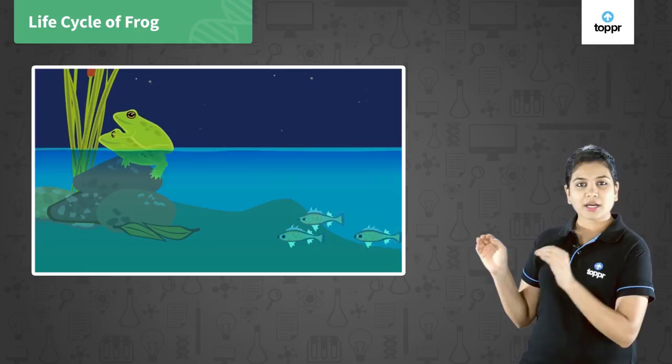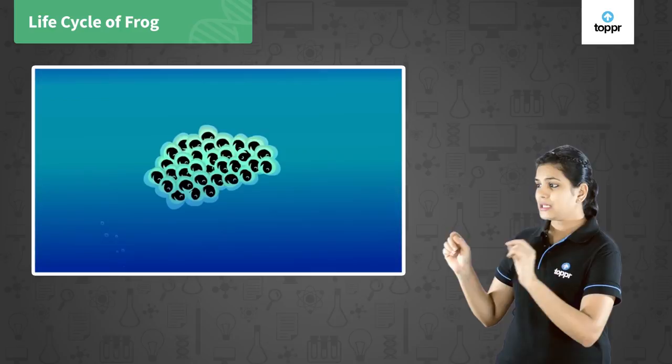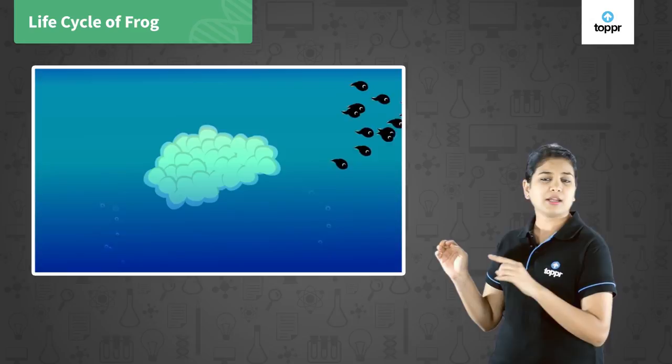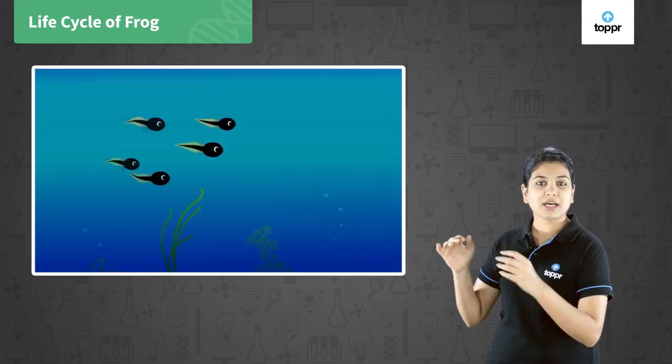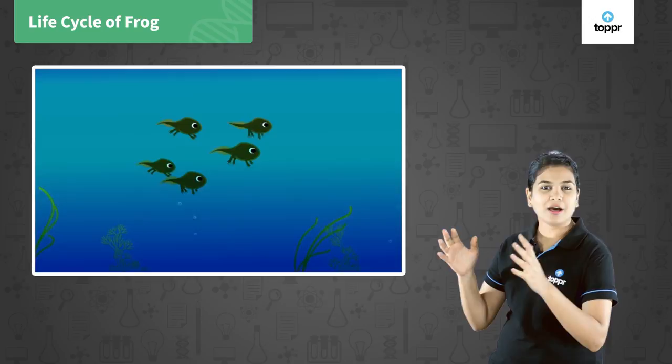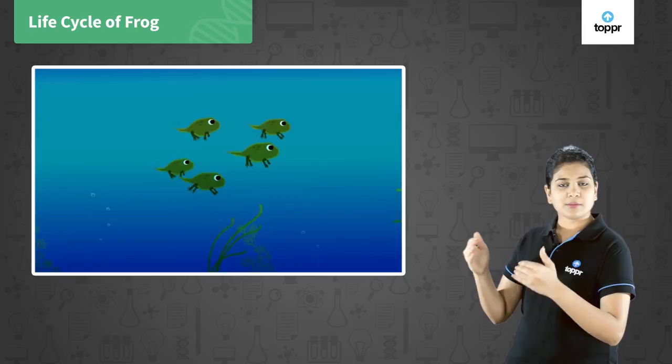To understand this, let us look into the life cycle of a frog. An adult frog lays eggs. These eggs will develop to form the tadpole. Tadpoles are nothing but the young babies of a frog and they look so different from an adult frog. Over a period of time, these tadpoles will gradually form legs and hands, becoming larger tadpoles. And these larger tadpoles, after some time, will turn into an adult frog.